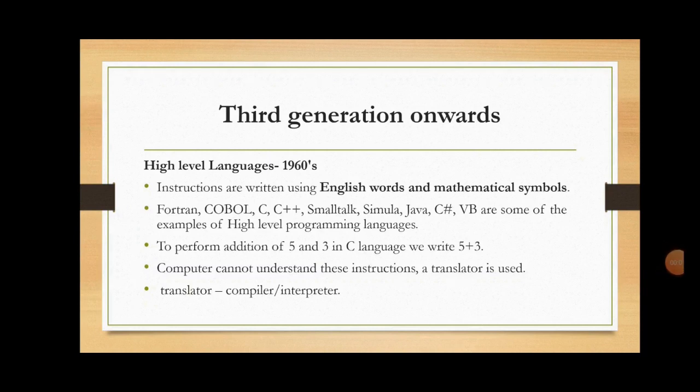To overcome the drawbacks of assembly level language, a new set of languages using English words and mathematical symbols were designed in the 1960s. These are called high-level programming languages. FORTRAN, COBOL, C, C++, Smalltalk, Simula, Java, C#, and VB are some examples of high-level programming languages. For example, to perform addition of two numbers 5 and 3 in C language, we simply write 5 + 3, which is much more readable.